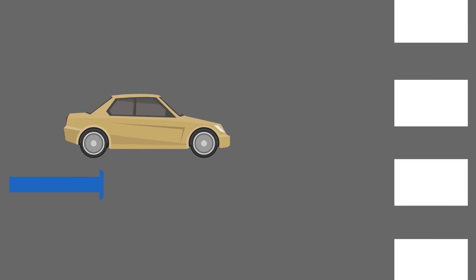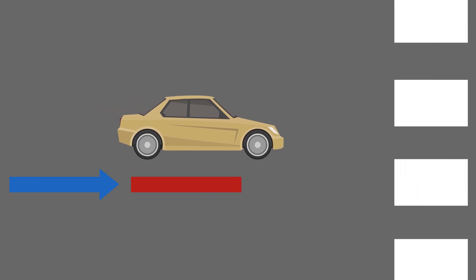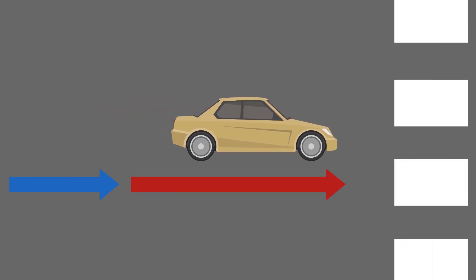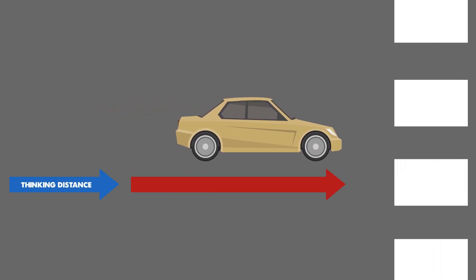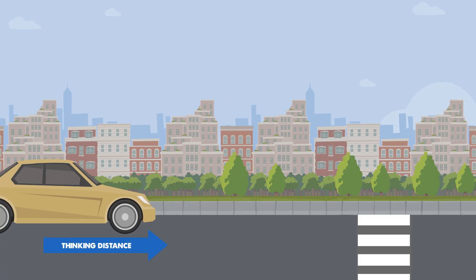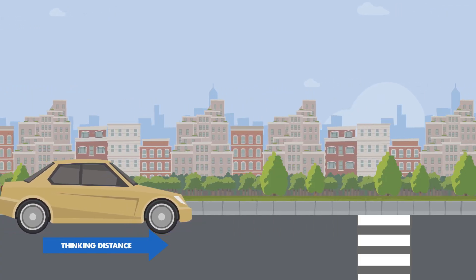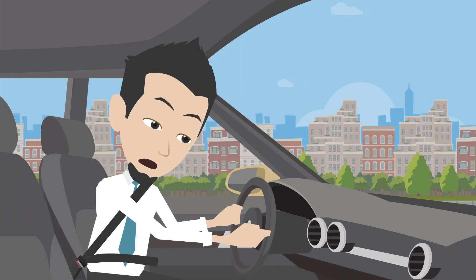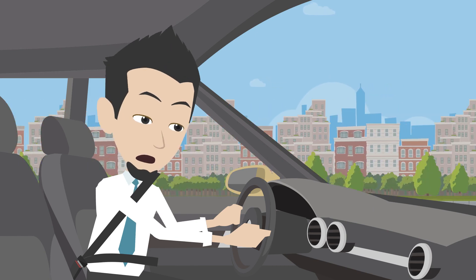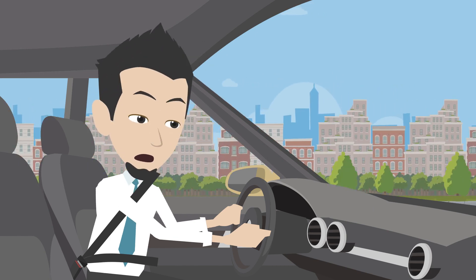Stopping distance is made up of two parts: the thinking distance and the braking distance. The thinking distance is the distance the car travels after the driver sees the obstacle until they hit the brakes.